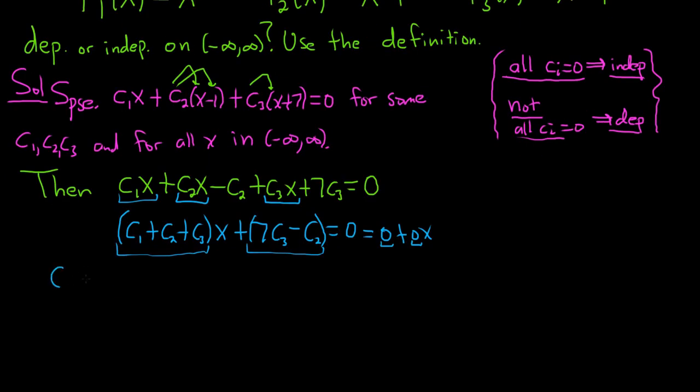This piece here must be equal to the zero in front of the x. This piece here must be equal to the zero here, just matching. So setting the first piece equal to zero, so c₁ + c₂ + c₃ = 0. Then here's the key. This whole thing is equal to zero because it's the constant term. So the whole thing is zero.